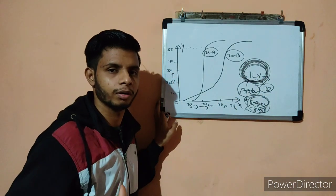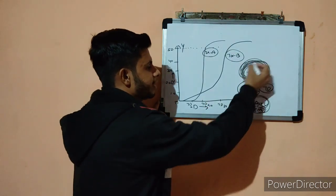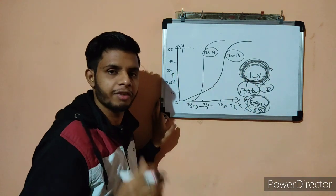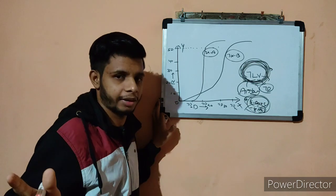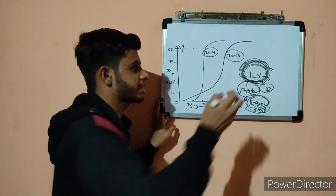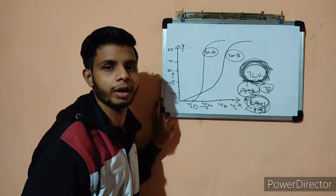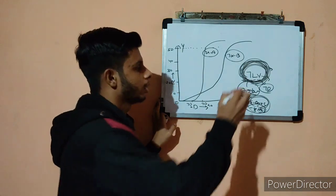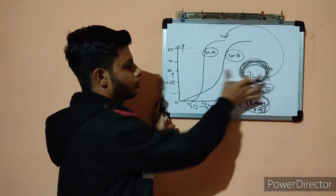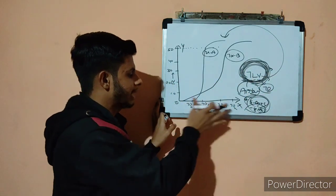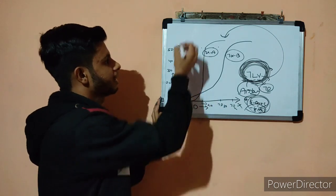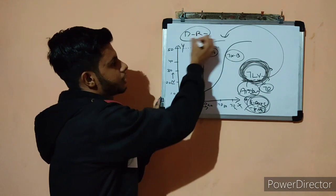Before understanding TLV, we need to understand one basic concept. This concept is important if you are looking for a job as a safety professional in industrial sectors, as an industrial hygienist, or as a toxicologist — this concept becomes very important as part of your job. Before going to TLV, we need to understand one curve called the DR curve, the Dose-Response curve, which is the basis for how TLV is established.